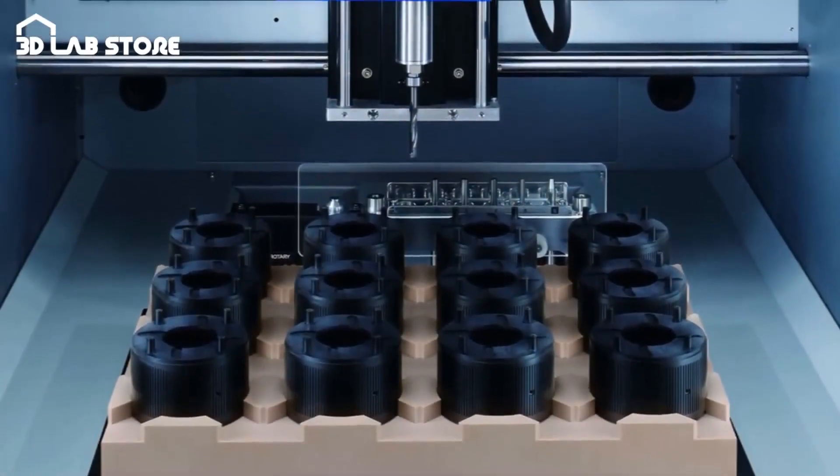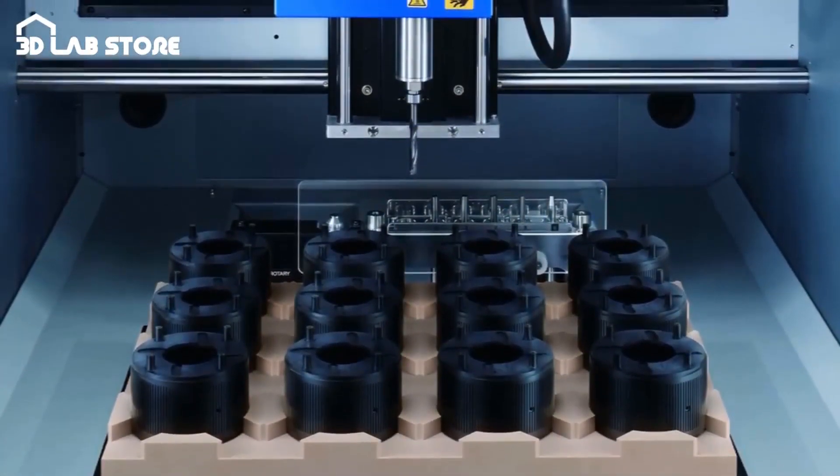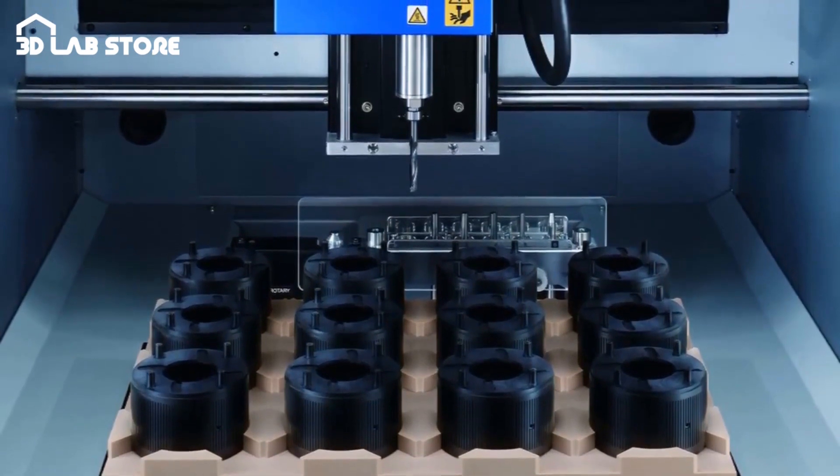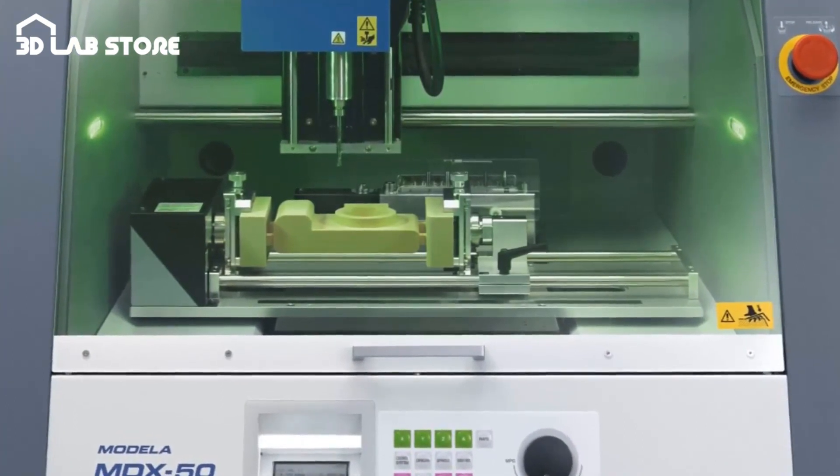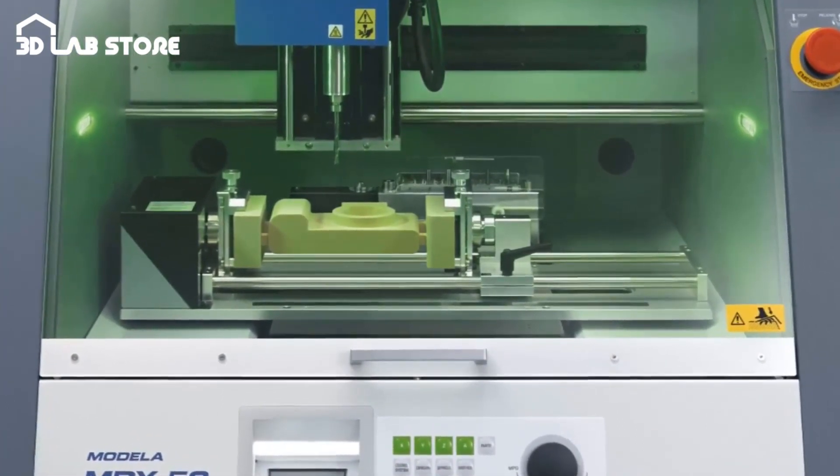The MDX50 has a table capacity of 15 inches by 12 inches and will accept materials nearly 4 inches thick. The optional rotary axis can hold a workpiece nearly 15 inches long with a radius of over 2 inches.